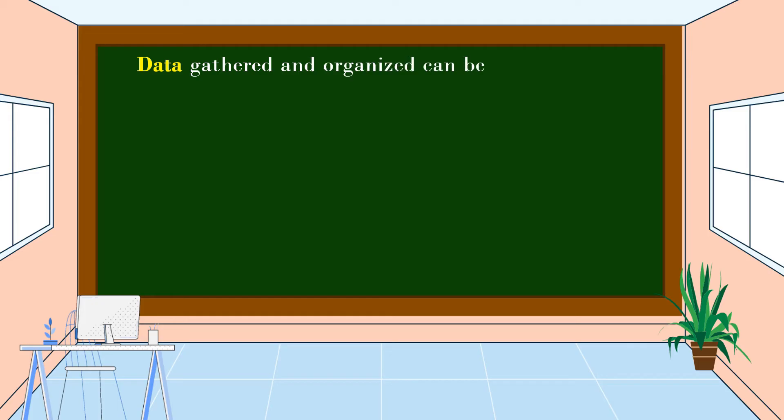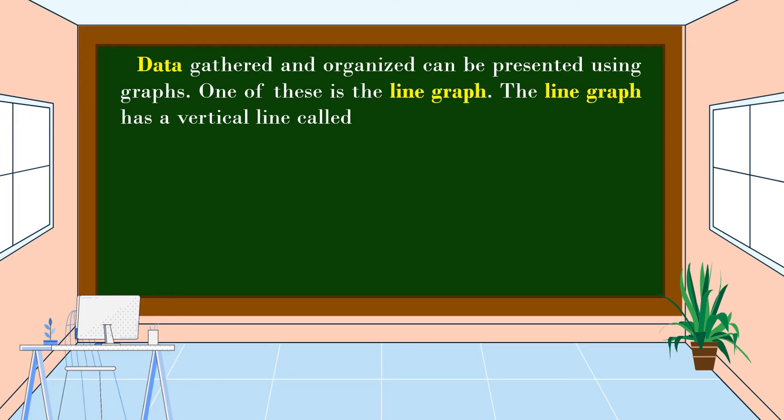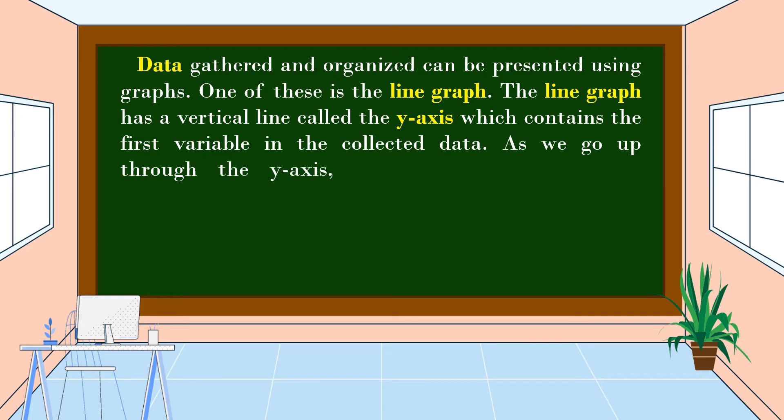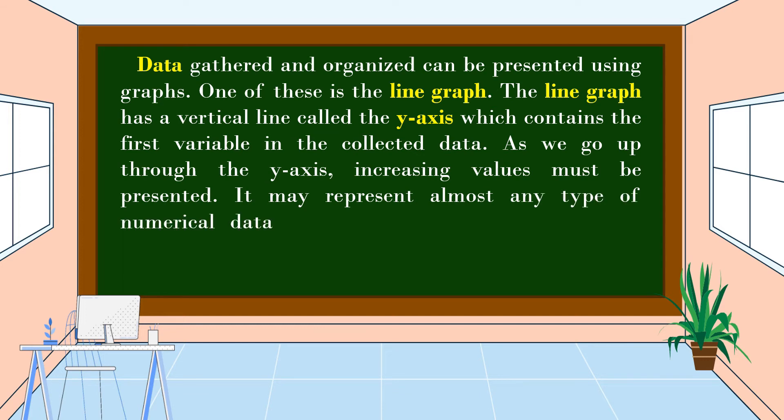Data gathered and organized can be presented using graphs. One of these is the line graph. The line graph has a vertical line called the y-axis, which contains the first variable in the collected data. As we go up through the y-axis, increasing values must be presented.